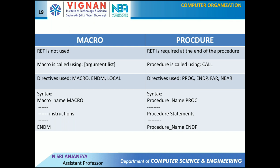In the case of a macro, there is no RET instruction required. In procedures, a RET instruction is required. A macro is called using the macro name followed by an argument list — the argument list is optional. A procedure is called using the CALL instruction followed by the procedure name. Directives used in macros are MACRO, ENDM, and LOCAL. In procedures, we need the PROC directive, ENDP directive, and FAR or NEAR directive. The syntax to define a macro is: macro_name MACRO, followed by the list of instructions, ending with ENDM. The syntax for a procedure is: procedure_name PROC, followed by procedure statements, ending with procedure_name ENDP.